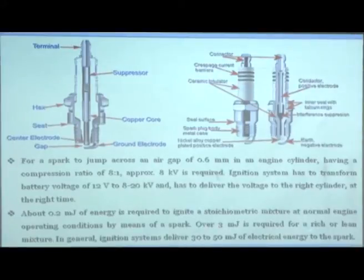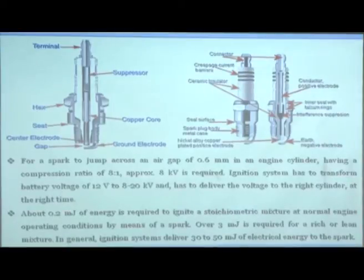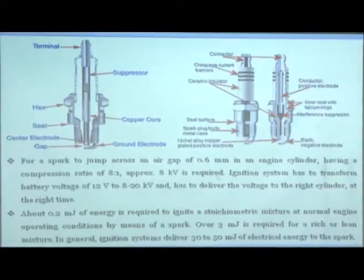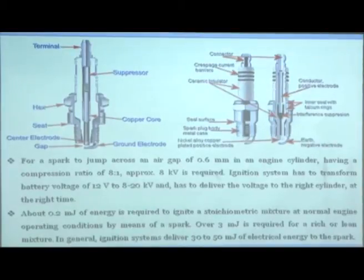About 0.2 millijoule of energy is required to ignite a stoichiometric mixture at normal engine operating conditions by a spark, while over 3 millijoules is required for rich or lean mixtures. Stoichiometric requires very little energy, but when the mixture becomes lean or rich the required energy is much higher. In order to make sure the spark fires reliably, the system is over-designed so that 30 to 50 millijoules of electrical energy is delivered at the electrode.